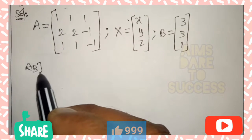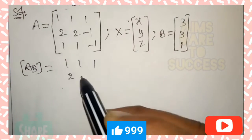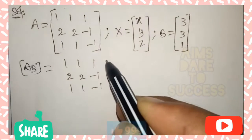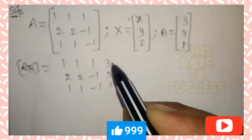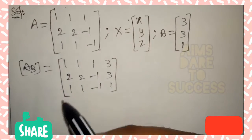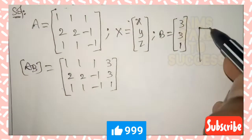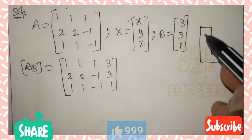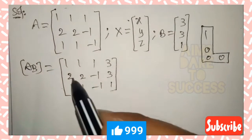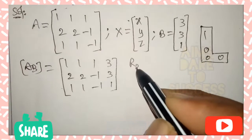Combining A and B, the augmented matrix [A|B] is: row 1: 1 1 1 | 3, row 2: 2 2 -1 | 3, row 3: 1 1 -1 | 1. Remember the L-symbol logic — we should get a 1000 pattern. If we get that, the Gauss-Jordan method becomes very easy.